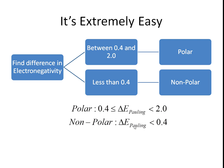Whichever of these two representations you prefer, you can learn. To read this: 0.4 is less than or equal to the difference in electronegativity on the Pauling scale. It's very important that you do these calculations using a table with values on the Pauling scale, otherwise you get the wrong answer. And this difference is also less than 2. For a non-polar bond, the difference in electronegativity is less than 0.4.